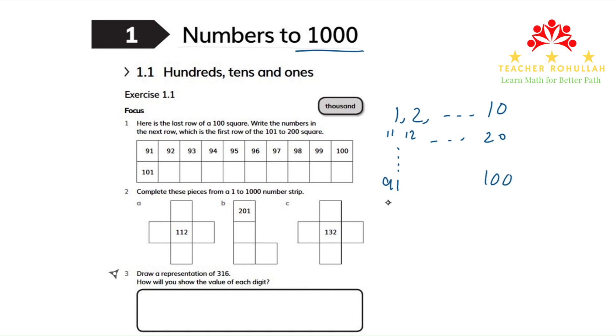In the next line we will have 101 up to 200 and what we are asked to do is filling this part.